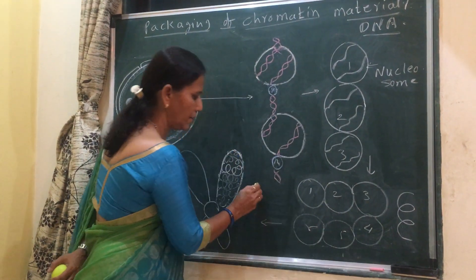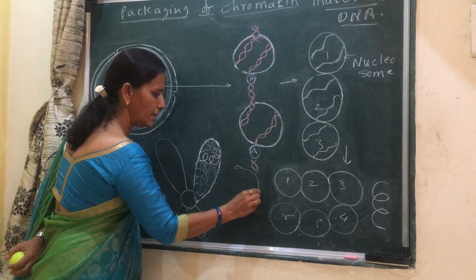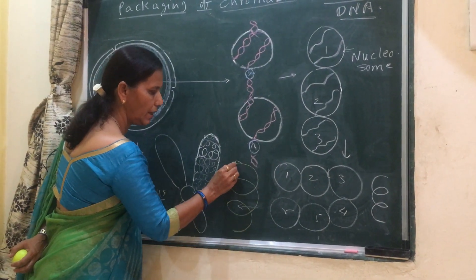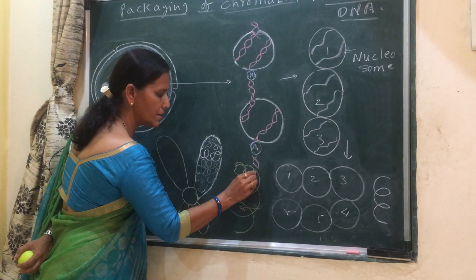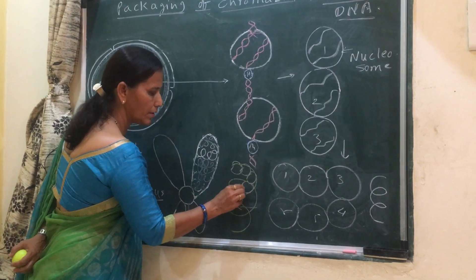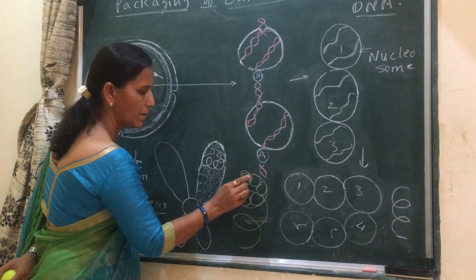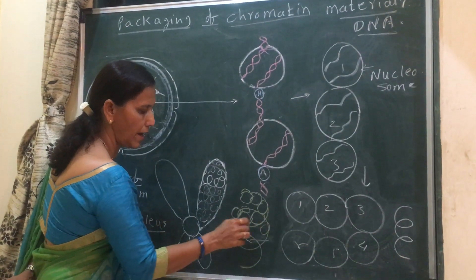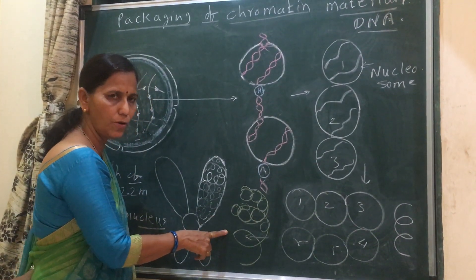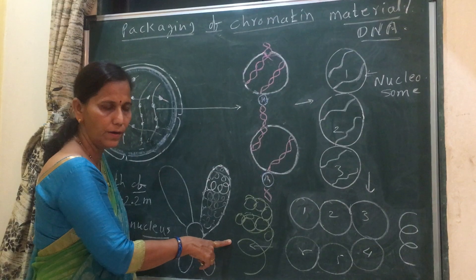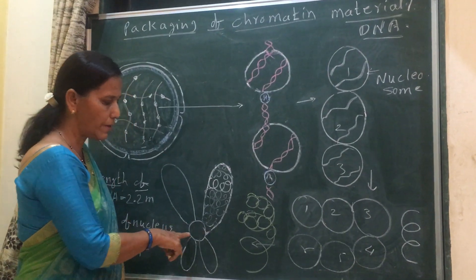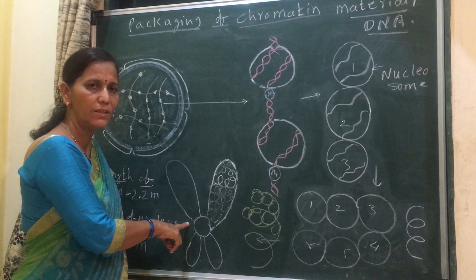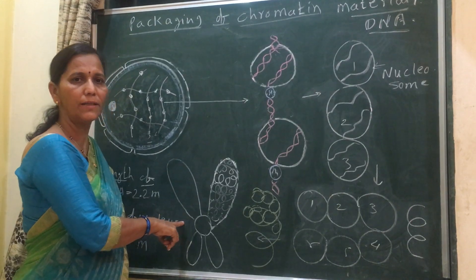This fiber is called the solenoid fiber, which consists of 6 nucleosomes in each turn — it is like a telephone coil with 6 nucleosomes per turn. It gets further coiled to form a super solenoid fiber, which is present in the metaphase chromosome, which is the shortest and thickest chromosome.